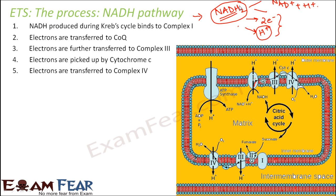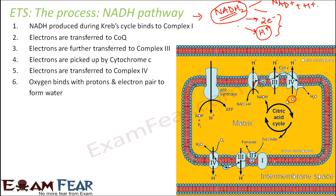NADH2 is a high energy molecule, so the electrons coming from it are also high energy electrons. They move down the potential gradient because they want to attain lesser energy and more stability. Finally, the electrons are transferred to Complex 4 where oxygen is present as the final electron acceptor. Oxygen binds with the electron pair and with a proton from the matrix to form water.